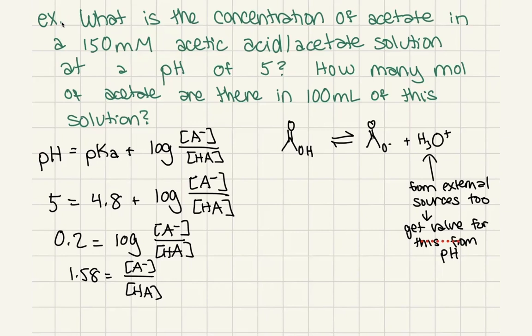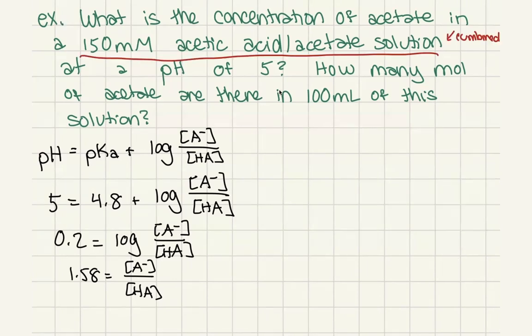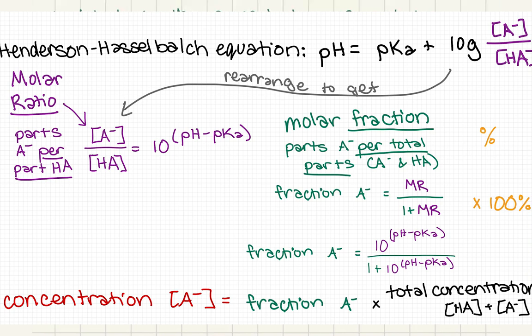But now we want to figure out the actual amounts, not just the ratio. There are a couple of different ways we could go about solving things at this point. So one way is to take this molar ratio and convert it to a fraction. So this is a ratio of parts of our conjugate base, so parts of our acetate, per part of our conjugate acid, so acetic acid. So what this is saying is we have 1.58 parts of acetate per part of acetic acid.